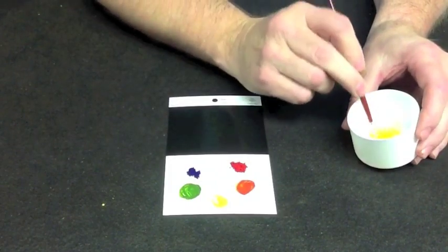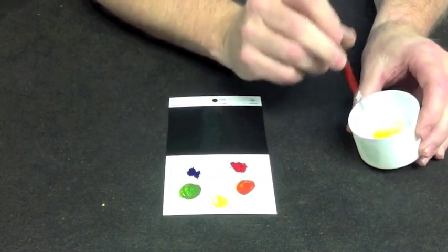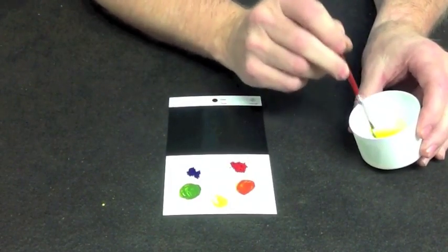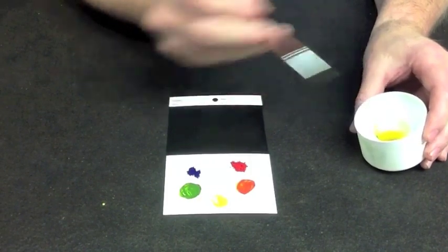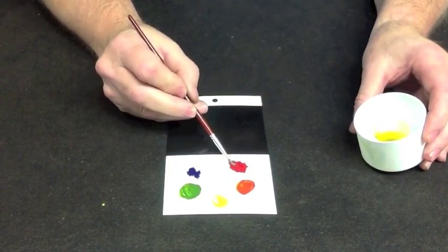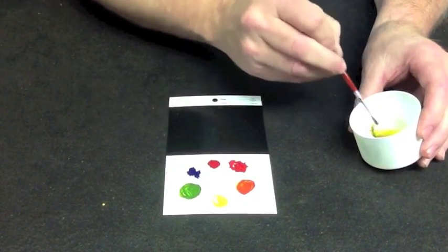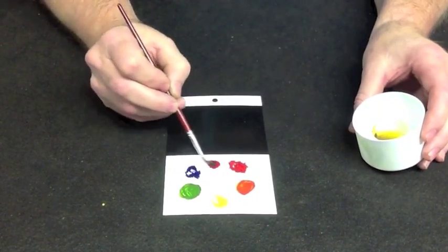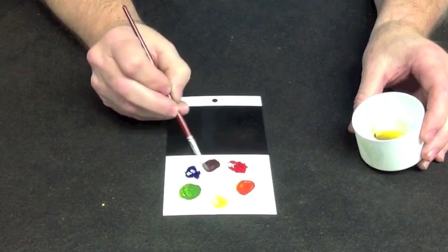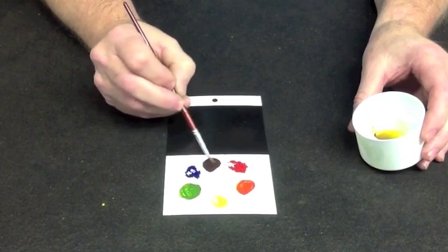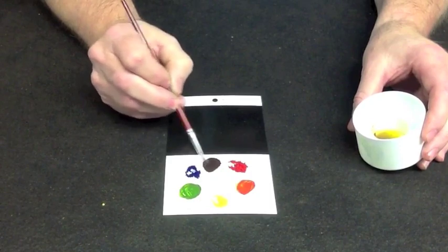So understanding how colors move is very important and how to adjust color. Take a little bit of the red, a little bit of the blue. We'll come up with a violet, a deep purple.